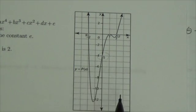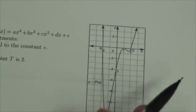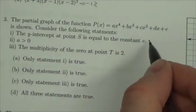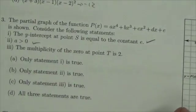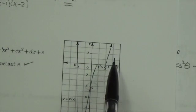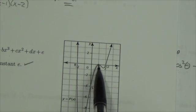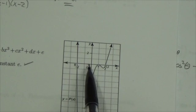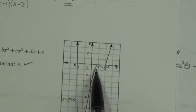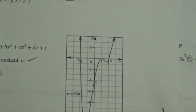Statement two: a is greater than zero. Well, it's a quartic and it opens up, so that's true. Statement three: the multiplicity of the zero at point t is 2. Looking at t on the graph, the curve runs tangent to the x-axis at t, which indicates the multiplicity of that root is in fact 2.